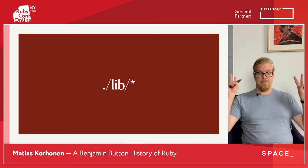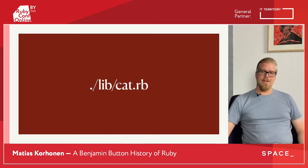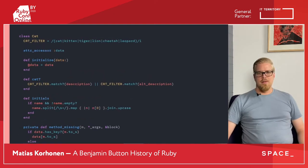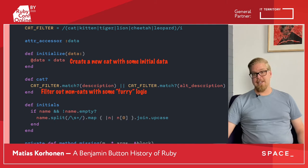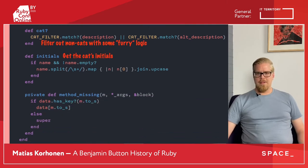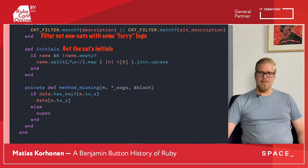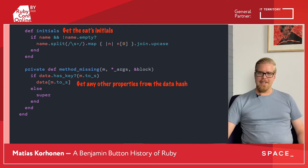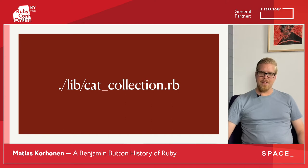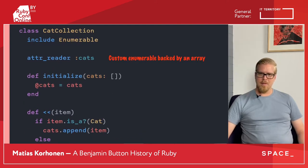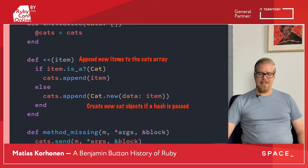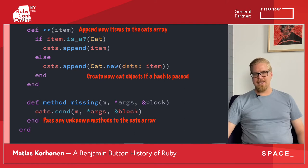Moving on to the business logic of our application, we have the all-important cat.rb, which describes the essence of a cat. We can create a new cat with some initial data. We can use some fuzzy logic to check if it's actually a cat or not. And then we can get the cat's initials. Finally, it just punts everything else to the data hash. Then we have the cat collection, which is a custom enumerable backed by a regular Ruby array. We can append items to the cats array, and if the item isn't already a cat, it will try and make a new cat out of it. Unknown methods are punted to the cats array.